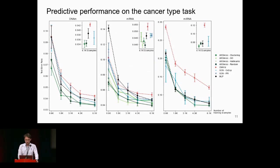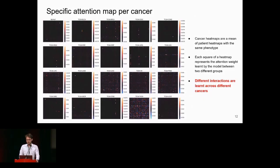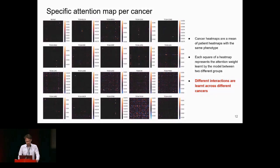This creates a trade-off between best performance and better interpretability. If we look at attention maps using biologically knowledge-aware groups, we can see important differences between each cancer. Each attention map is the mean attention map across patients with the same cancer, and we can see specific interactions detected by the model for each cancer type.